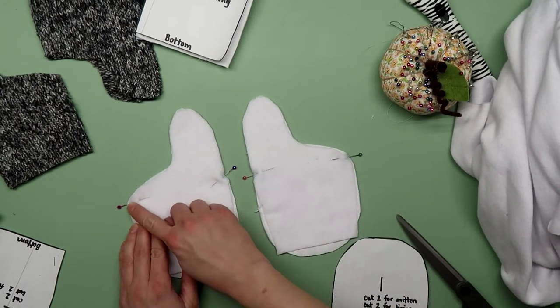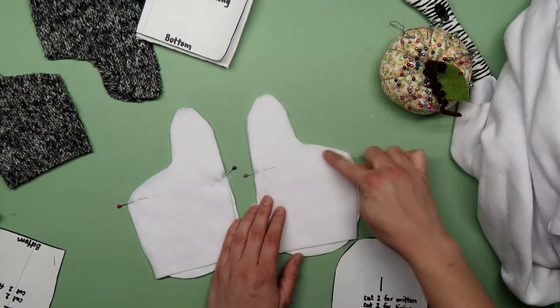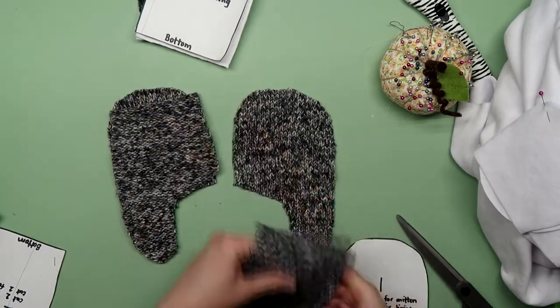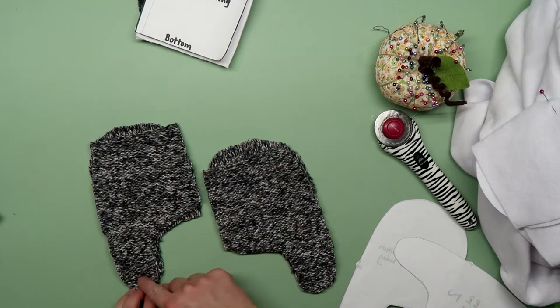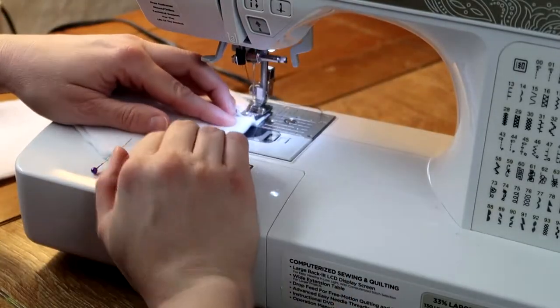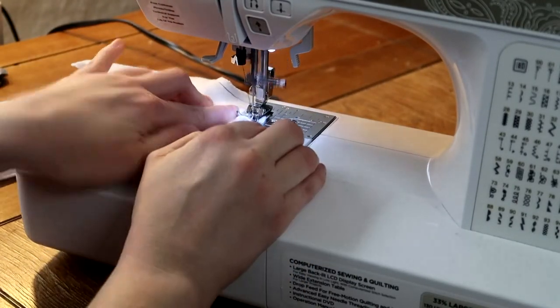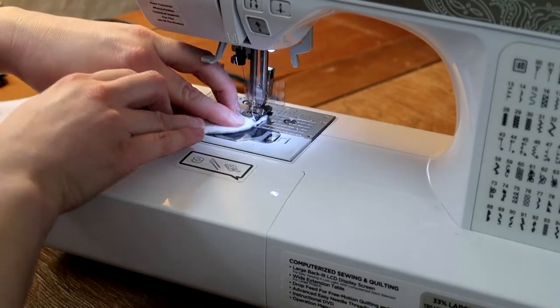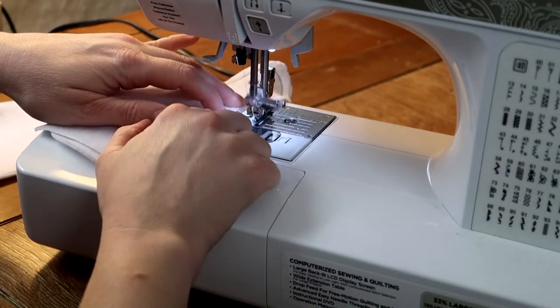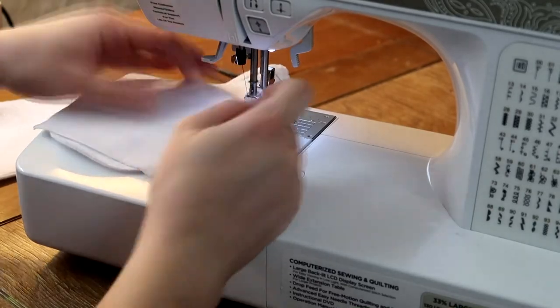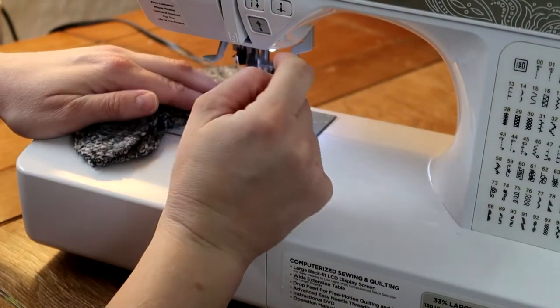Sew from pin to pin creating the palm and thumb section. Do this for the lining as well as the sweater pieces. I'm using a quarter inch seam allowance. Go slow around the thumb because it's a tight curve. It can be a little tricky to sew the sweater material. You may have to help it along.